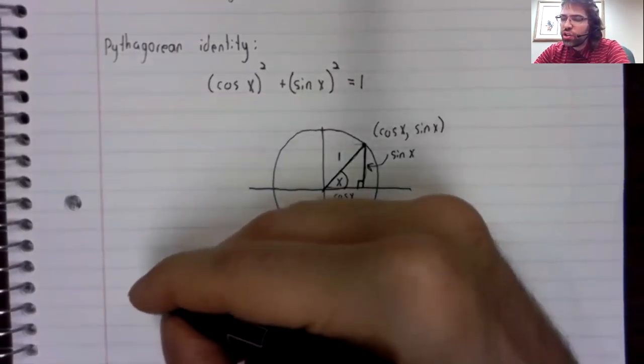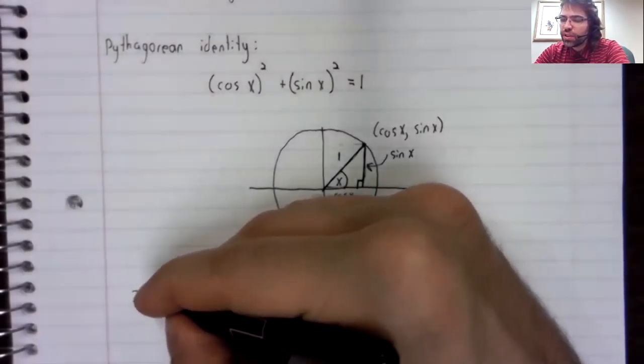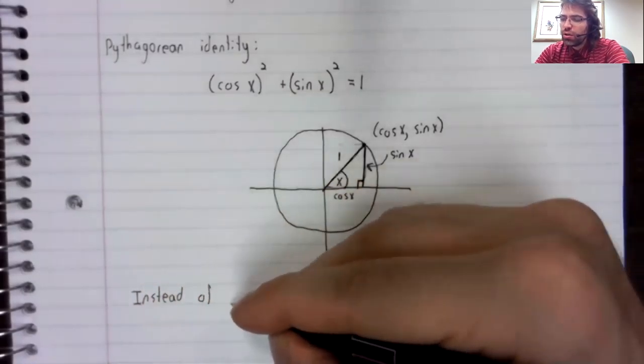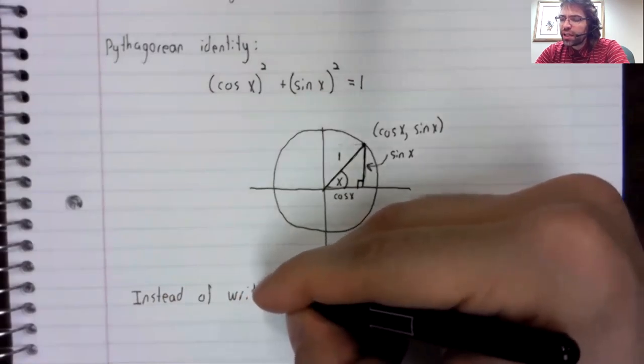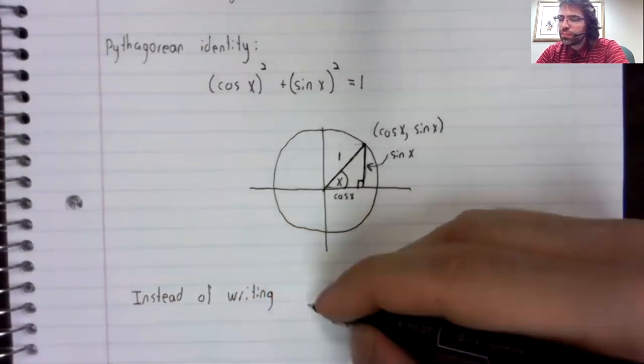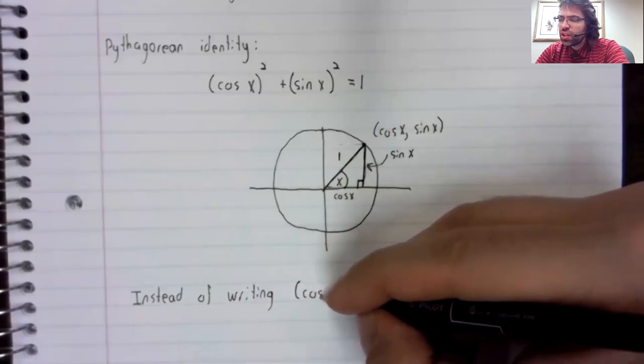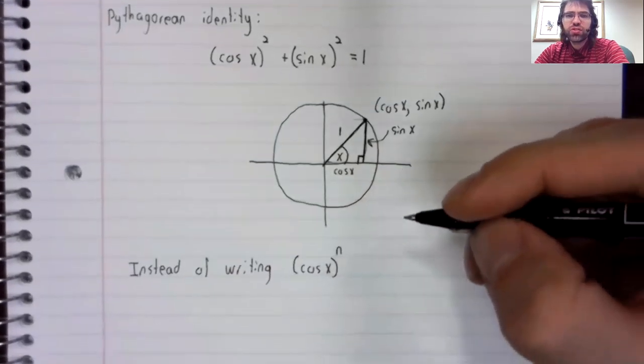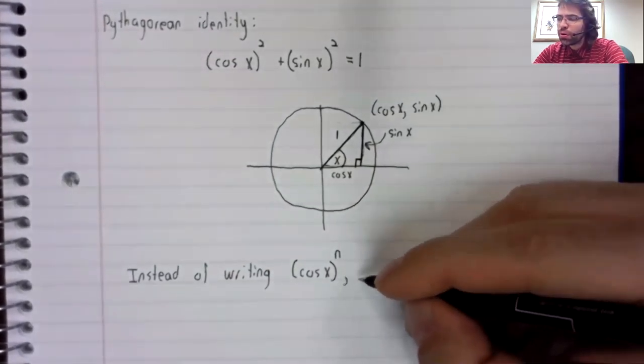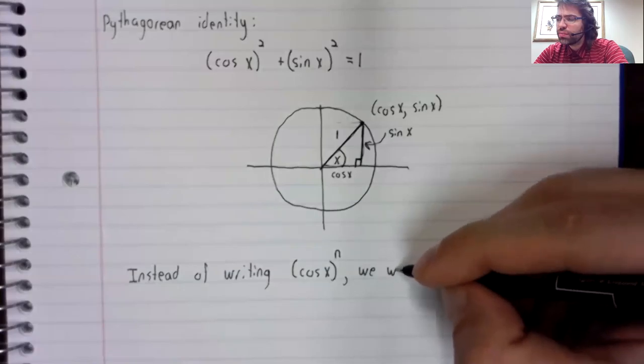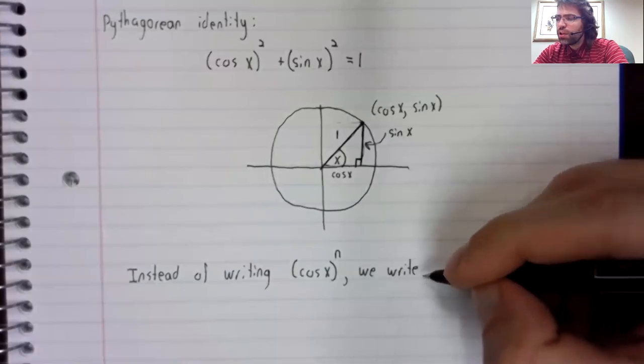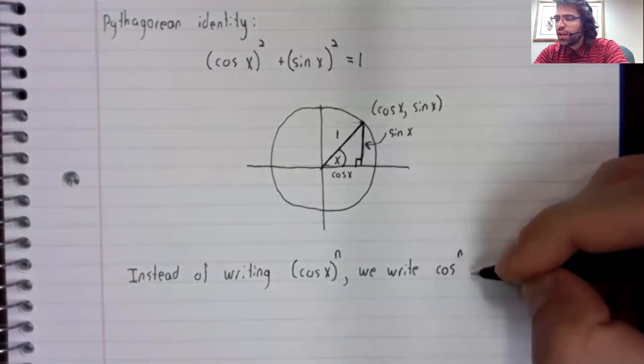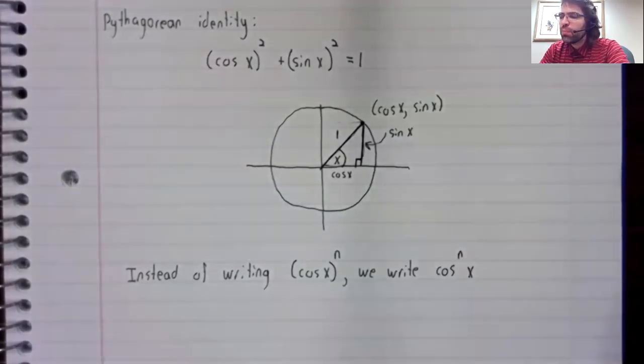Let's rewrite the Pythagorean identity and also take this opportunity to introduce a bit of new notation. Instead of writing cosine of x raised to some power like that...